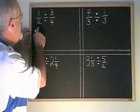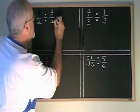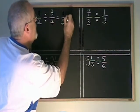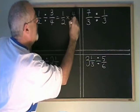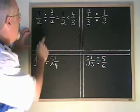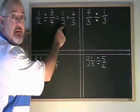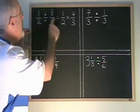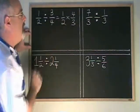So 1 half divided by 3 quarters becomes 1 half times 4 thirds. The first fraction stays the way it is. The second one turns upside down and we turn a divided by sign into a multiply sign.